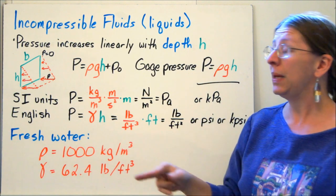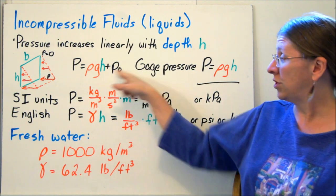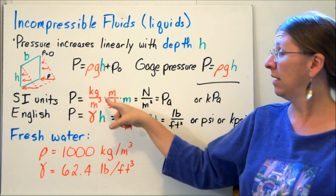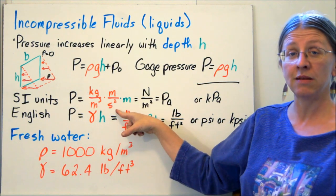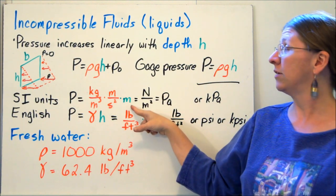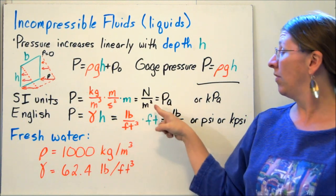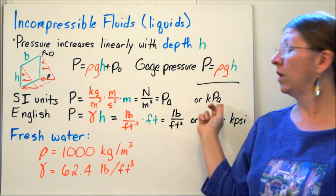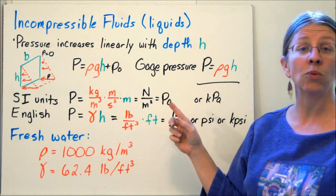In SI units, P is ρgh. That's kilograms per meter cubed - that's your density. Meters per second squared - that's acceleration due to gravity. And your h is in meters. That's newtons per meter squared, or pascals. We'll also use kilopascals because the numbers get really big.